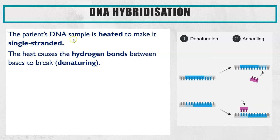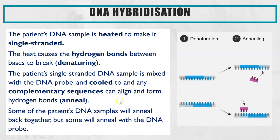The patient's DNA sample has to be treated by heating up, so that the hydrogen bonds between the bases break and therefore you get single-stranded DNA — that stage is called denaturing. The patient's single-stranded DNA sample is then mixed with the DNA probe and cooled down, so if there are any complementary sequences that have aligned opposite each other, hydrogen bonds can then form. We call this stage annealing.